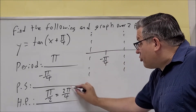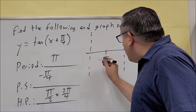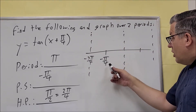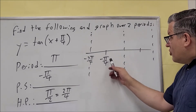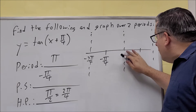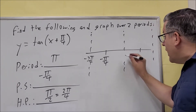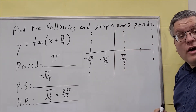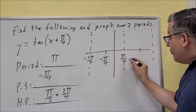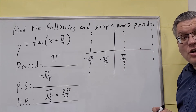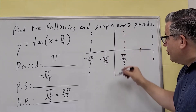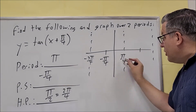If I take negative pi over 4 and subtract 2 pi over 4, I get negative 3 pi over 4. So negative 3 pi over 4 will be that left vertical asymptote. To get the asymptote on the right, I add 2 pi over 4 to negative pi over 4, giving me positive pi over 4. That means the vertical axis — the zero line — is right there, right between the negative and the positive asymptotes.